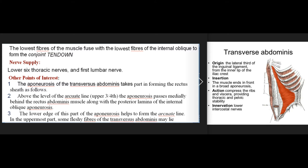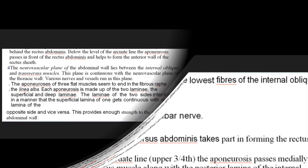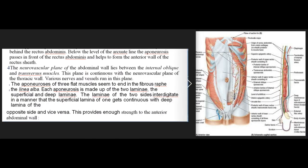Other points of interest: the aponeurosis of the transversus abdominis takes part in forming the rectus sheath as follows. Above the level of the arcuate line, the aponeurosis passes medially behind the rectus abdominis muscle along with the posterior lamina of the internal oblique aponeurosis. The lower edge of this part of the aponeurosis helps to form the arcuate line. Below the level of the arcuate line, the aponeurosis passes in front of the rectus abdominis and helps to form the anterior wall of the rectus sheath. The neurovascular plane of the abdominal wall lies between the internal oblique and transversus muscles and is continuous with the neurovascular plane of the thoracic wall.